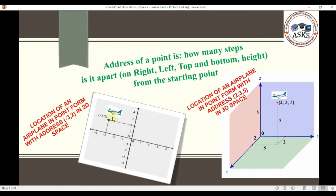Then the location of the plane is such that it is three miles away from the starting point in the left direction, and two miles on the top. So, the address of this plane is minus 3 from the left, and two to the top.